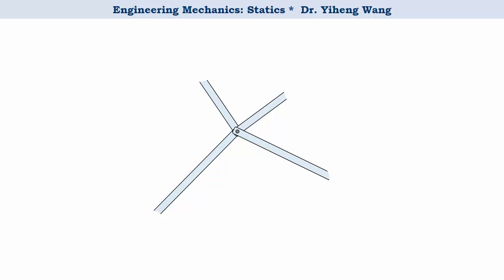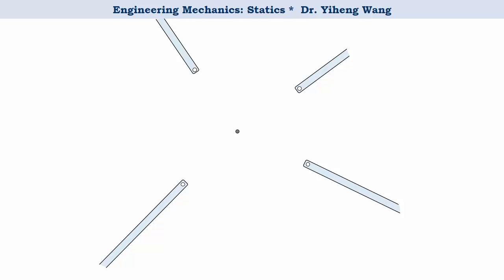Let's imagine several truss members joined together by a pin. Then if we separate them, the pin exerts forces on these members, and for convenience let's assume they are all tensions.